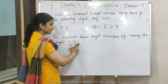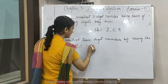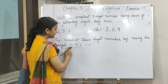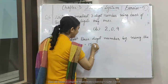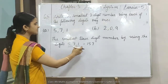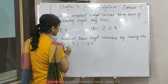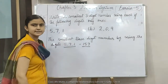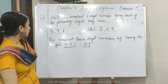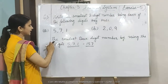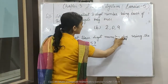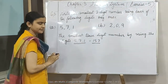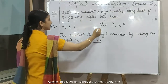देखें, 5, 7, 1 है। तो आप क्या करेंगे — सबसे पहले 1, then next number 5, and 7। तो 3 digits का हमारा smallest जो number हुआ, इन digits को यूज करते हुए, वो क्या हुआ — 157। तो इस तरीके से आप proper statement लिखेंगे: the smallest 3-digit number by using the digits 5, 7, 1 equals to 157।